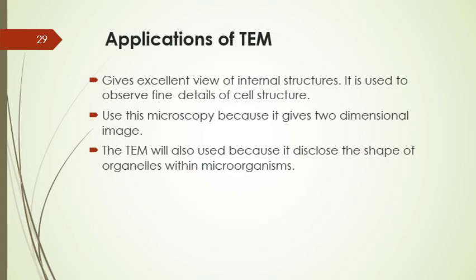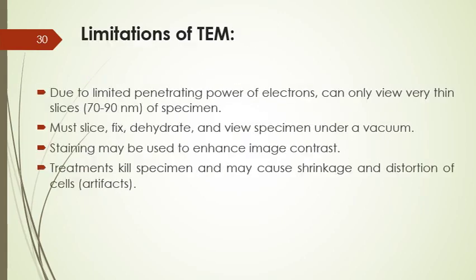Applications of transmission electron microscopy: it provides an excellent view of internal structures, is used to observe fine detail of cell structure, gives a two-dimensional image, and is used to study the shape of organelles within microorganisms. Limitations include: limited penetrating power of electrons means only very thin slices of about 70–100 nanometers can be viewed. Slides must be fixed, dehydrated, and viewed under vacuum. Staining used to enhance image contrast, and these treatments kill the specimen and may cause shrinkage and distortion of cells.